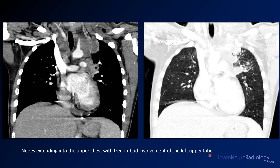A couple of images through the lungs show the necrotic appearing nodes extending to the upper chest. A nice clue here is the tree-in-bud abnormalities in the upper lungs, which is pretty typical for a mycobacterial infection.